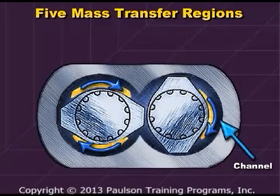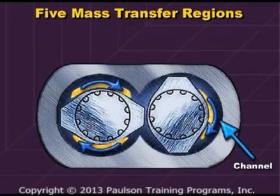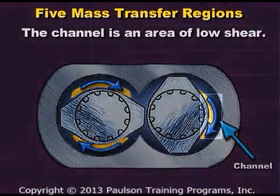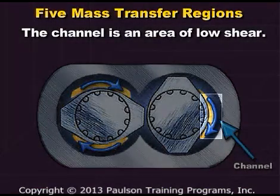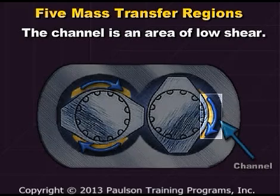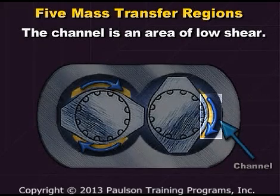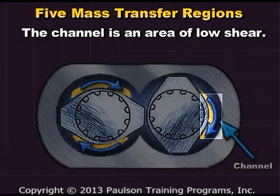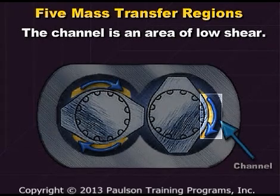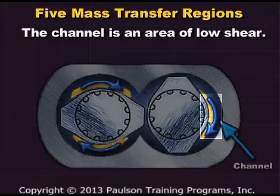The channel here is the same area as the one we earlier called the screw channel. This is an area of low shear in which the amount of raw material fed into the extruder affects the rate of mixing. Of the five screw regions, the channel is the one with the least amount of shear effect.